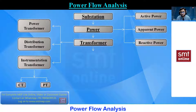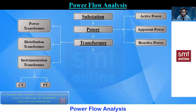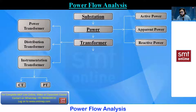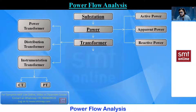Transformers are classified into three types: power transformers, distribution transformers, and instrumentation transformers. If the capacity of a transformer is more than 3 MVA, it is called a power transformer. Power transformers are found only in substations, not at the distribution site.